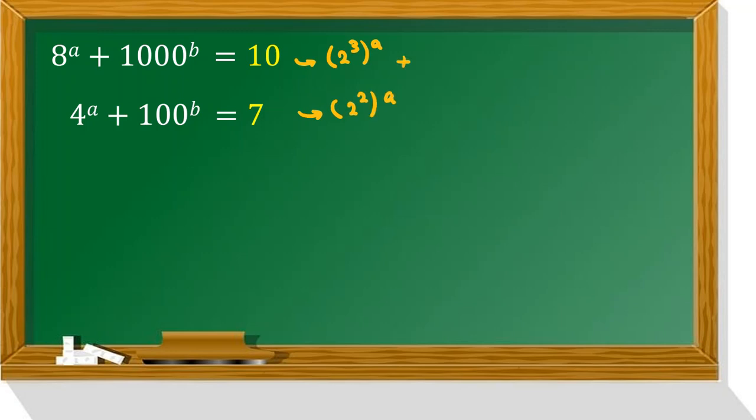So we can write 8 as 2 cubed and 4 as 2 squared. 1,000 and 100 are powers of 10. So it's 10 cubed, and this one is 10 squared. Equal to 10, equal to 7.